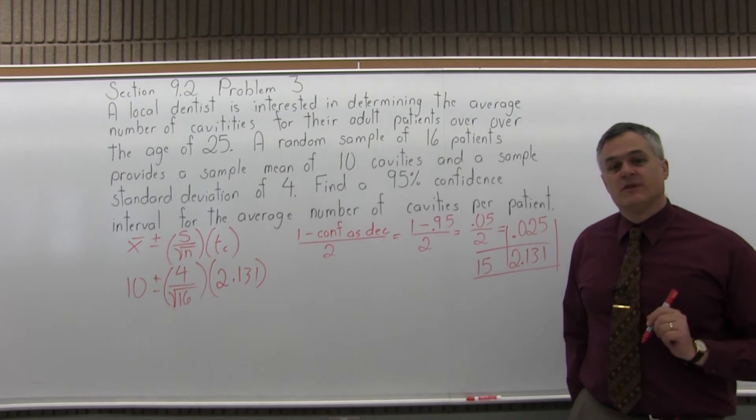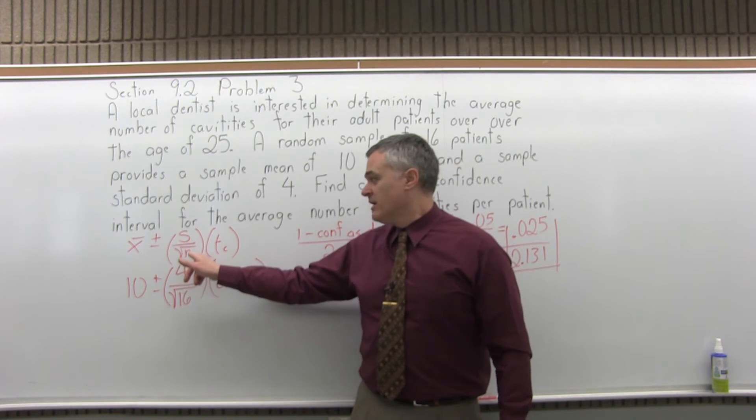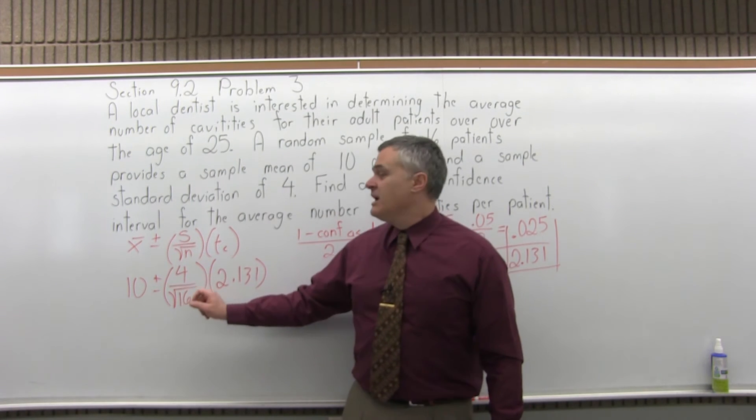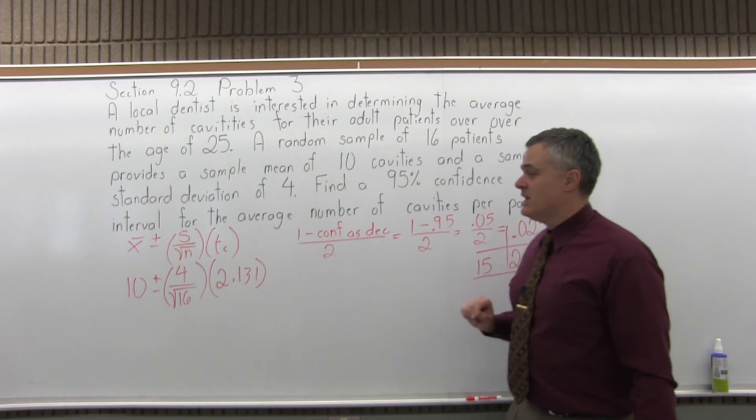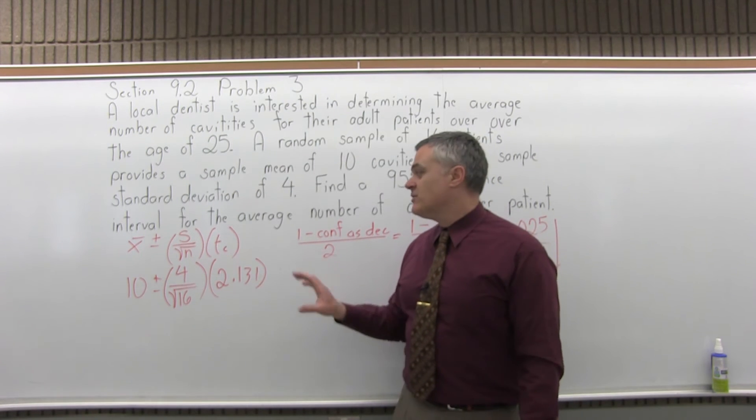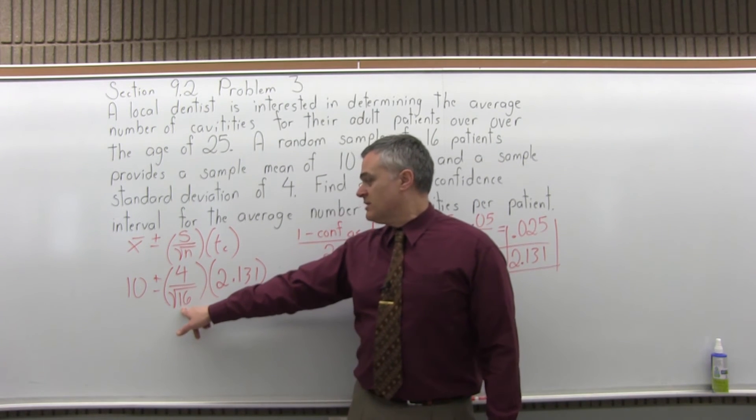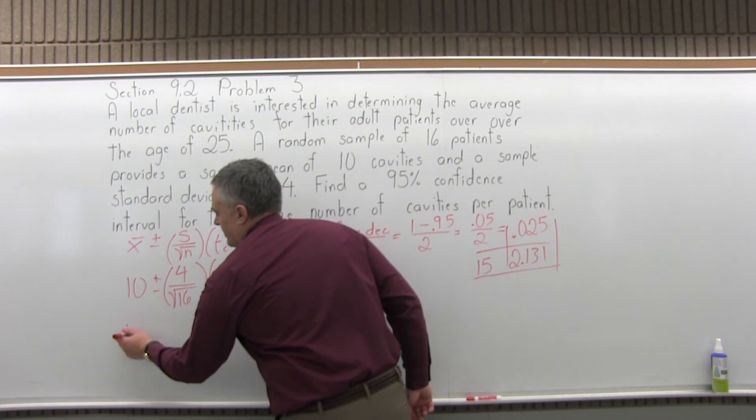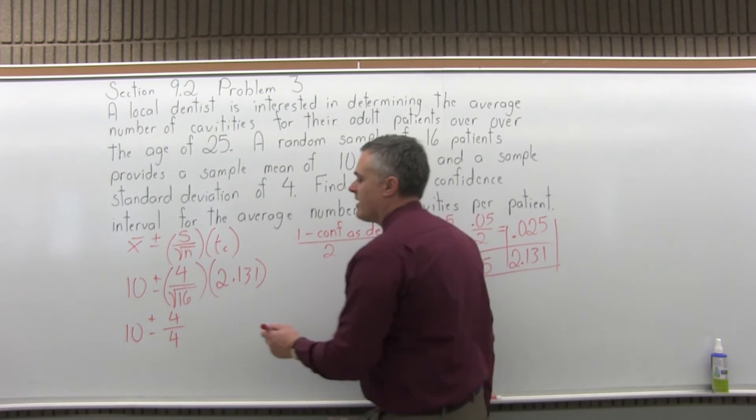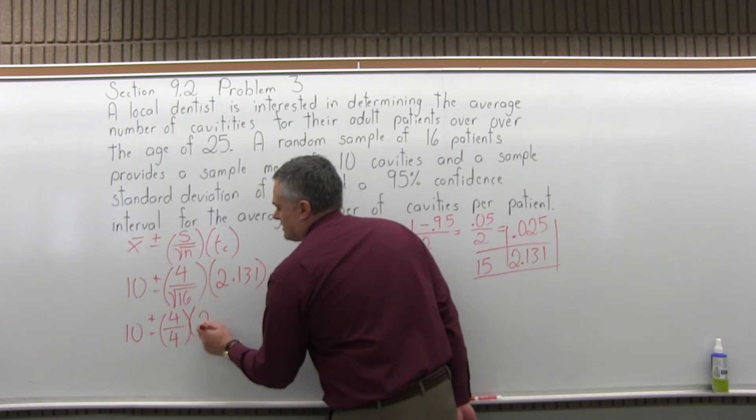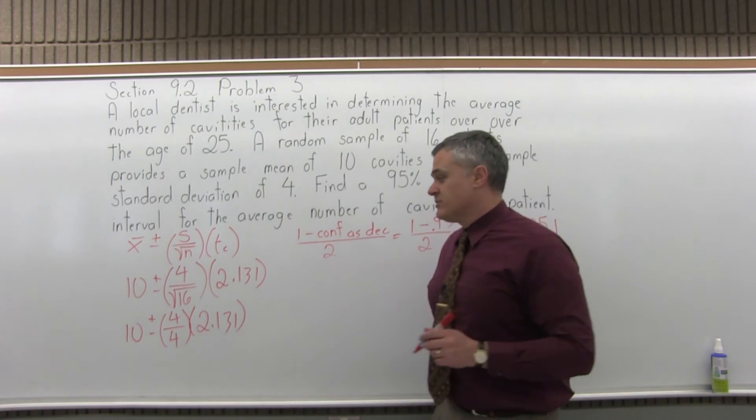So now we have the formula filled in. The x̄ sample mean was 10. The s sample standard deviation was 4. The square root of n, square root of the sample size, was the square root of 16. And the t sub c, the confidence coefficient for this, was 2.131 that we get from that chart. Now that it's filled in, it's just a matter of doing the math. If you make a mistake, it's more likely that you make it filling it in. Once you get to this point, if you have a calculator, you'll probably do all right. The first thing that you're going to need to do is deal with that square root. So let me write that as 10 plus or minus 4 over square root of 16 is 4, because 4 times 4 is 16, times 2.131. That will stay for now. Next I can reduce 4 divided by 4. It simply reduces to 1 clearly.